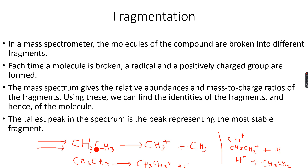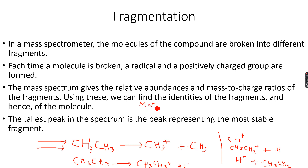All these fragments are displayed on the mass spectrum. By identifying the fragments we can identify the compound. Each time a molecule is broken, a radical and a positively charged group are formed. The mass spectrum gives the relative abundances of the fragments and their mass-to-charge ratios. The mass-to-charge ratio is the relative molecular mass divided by the charge.